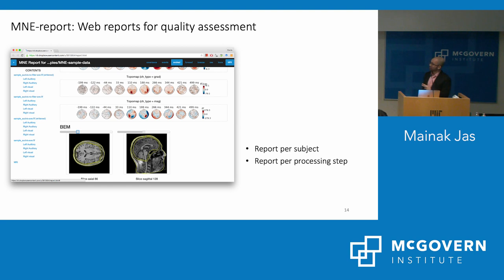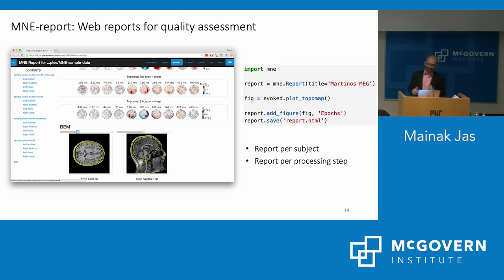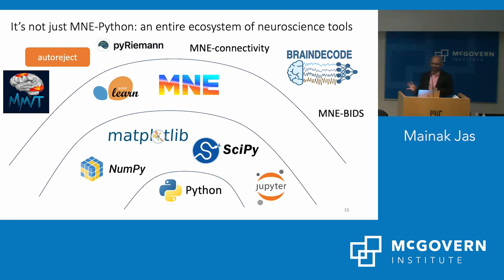Something fairly unique to MNE is the MNE Report, designed for quality assessment at scale. If you have 50 subjects with five processing steps each, you don't want to manually check 250 steps. Instead, you save an HTML report per subject that you can glance through afterward, spot problematic steps, and share with colleagues. Any plot in MNE returns a figure handle, which you can supply to the MNE Report and save to HTML.